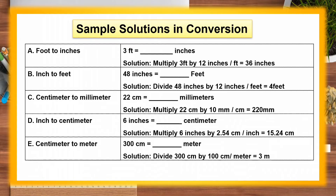D. Inch to centimeter: 6 inches equals how many centimeters? Solution: multiply 6 inches by 2.54 centimeters. Therefore, 6 inches equals 15.24 centimeters. E. Centimeter to meter: 300 centimeters equals how many meters? Solution: divide 300 centimeters by 100 centimeters. Therefore, 300 centimeters equals 3 meters.